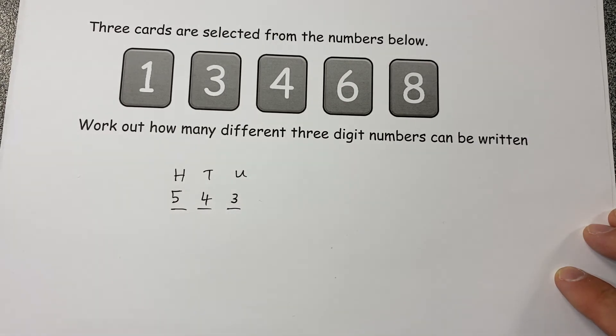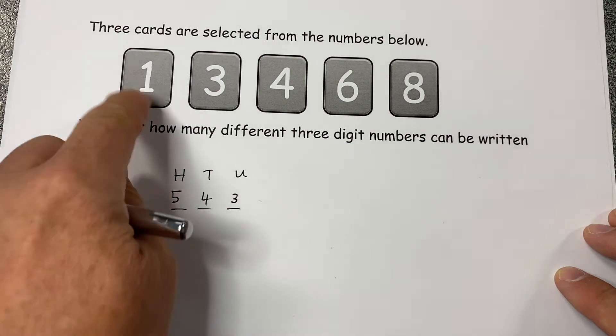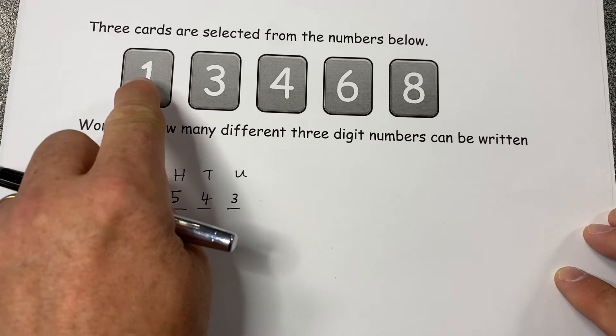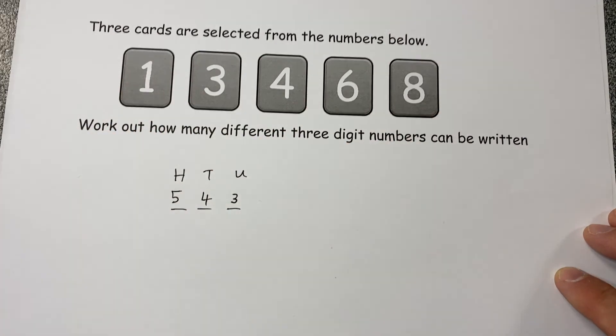And that scenario is true for whatever I selected. So if I selected the three for the hundreds, I've still got four options for the tens. If I selected the six for the tens, I've still got three options for the units.